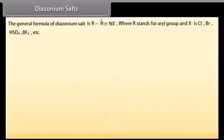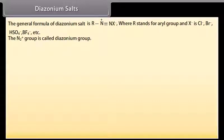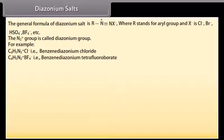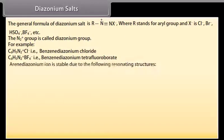Diazonium salts: The general formula of a diazonium salt is RN2+ X−, where R stands for an aryl group and X− is chloride ion, bromide ion, hydrogen sulfate ion, or tetrafluoroborate ion. The N2+ group is called the diazonium group. For example, C6H5N2+ Cl− is benzene diazonium chloride, and C6H5N2+ BF4− is benzene diazonium tetrafluoroborate. The arene diazonium ion is stable due to resonating structures.